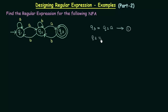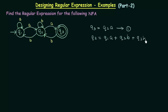Now let's do the same thing for state Q2. Q2 has incoming transitions from Q1, Q2, and Q3. We take the union of all of them. From Q1 it is coming with input A, from Q2 it is coming with input B, and from Q3 it is coming with input B. So Q2 = Q1A + Q2B + Q3B. This is equation number 2.